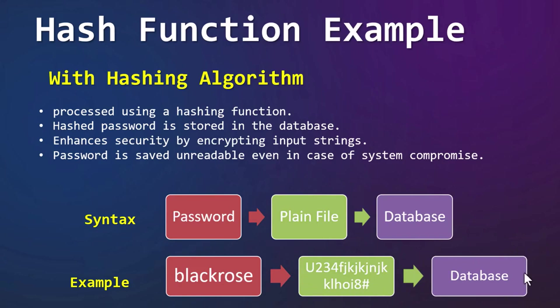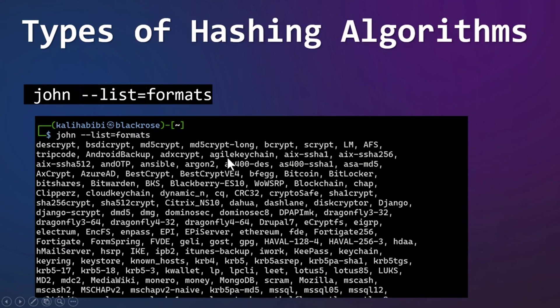Now let's see the different types of hashing algorithms supported by John the Ripper. John the Ripper is able to perform various attacks and crack a lot of hash formats. We can check all the formats supported by John the Ripper with the command: john --list=formats. When we run this command it will display all the hashing algorithms supported by John.